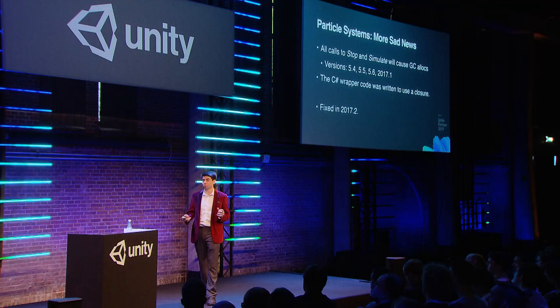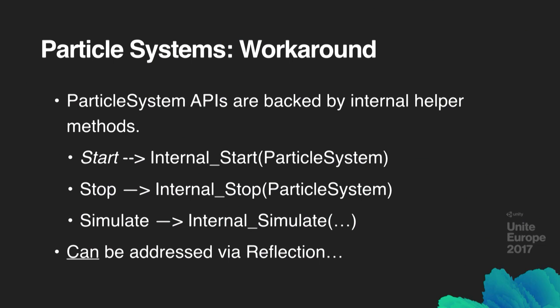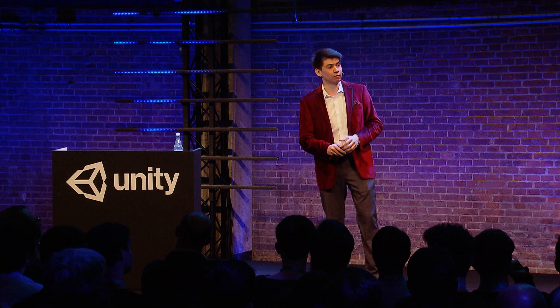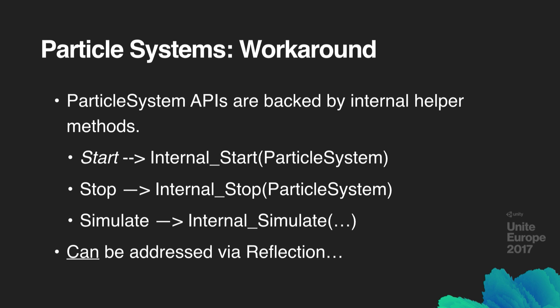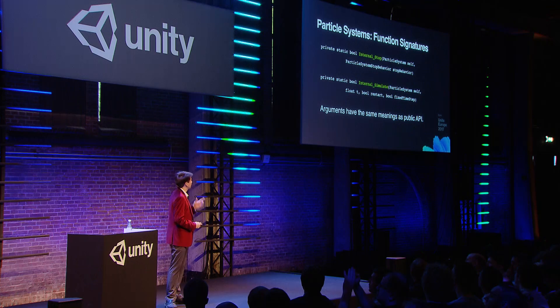Some of you may be close to shipping and can't wait for 2017.2. Here's a hint: those public APIs are just C# wrapper functions around internal ones. All the internal APIs are conveniently named Internal_ followed by the actual function you wanted to call. You could write an extension method or address them via reflection, cache the reference to the function, and then call them yourself. All the arguments are identical to the ones in the public API, except for the first, which is just a reference to the particle system you want to stop or simulate. These slides will be posted later for reference.